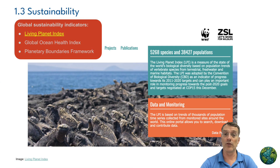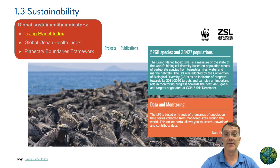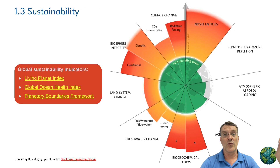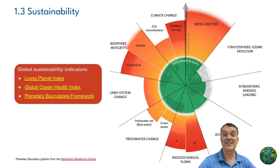At the largest scale — the global level — we can look at something like the Living Planet Index, which measures global biodiversity trends and helps us track where biodiversity is stable or where it is most threatened and decreasing most rapidly. We also have the Global Ocean Health Index to assess the overall condition of marine ecosystems around the world. One you'll need to know how to use and interpret in ESS is the Planetary Boundaries Framework, which helps us identify the safe operating space for humanity with respect to Earth's natural systems.